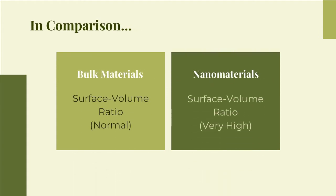In addition, nanomaterials also have an increased surface to volume ratio compared to bulk materials. This has important consequences for processes that occur at the surface of a material, such as catalysis and detection.